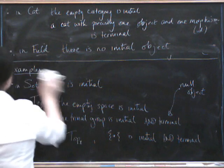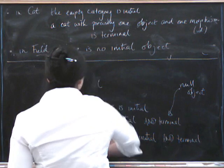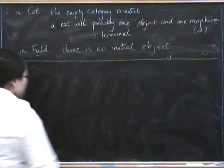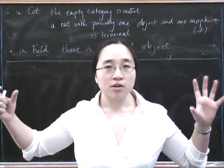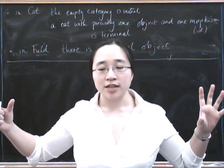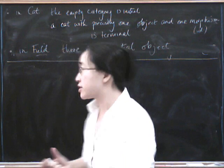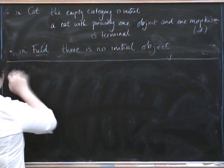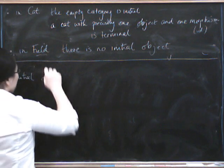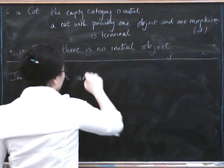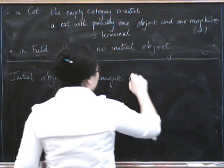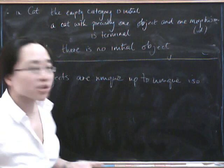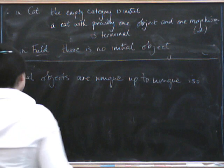So, it's worth also saying, while we're here, that anything that's true about terminal objects is going to be also true about initial objects in the dual form. Because an initial object in here is just a terminal object in the dual category, anything we can deduce about terminal objects, we can just then dualize and deduce about initial objects. So, for example, initial objects, just like terminal objects, are unique up to unique isomorphisms. And the proof is exactly the same as the one for terminal objects, and it's the dual.